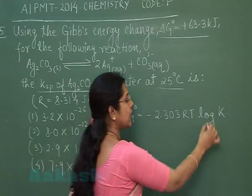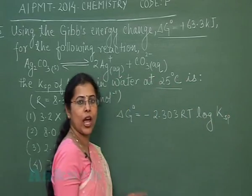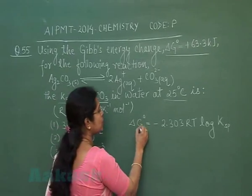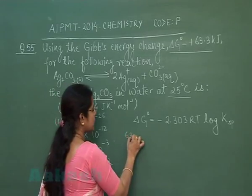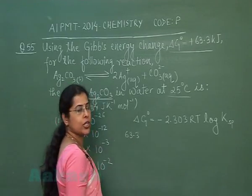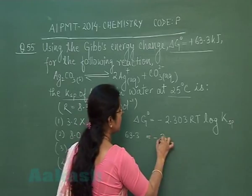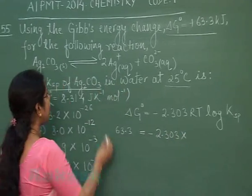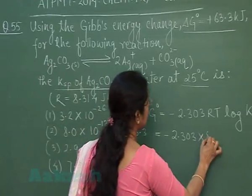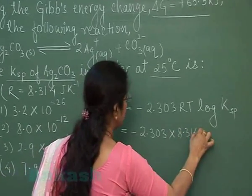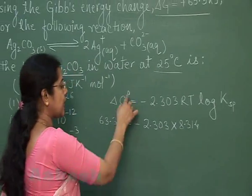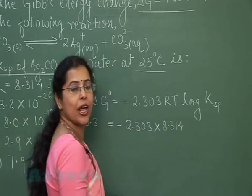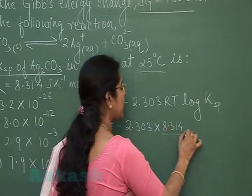This K is the solubility product which we have to find out. All values are given in the question: ΔG° is 63.3 kilojoules, R is 8.314 joules. Since ΔG° is taken in kilojoules, we have to consider R also in kilojoules.